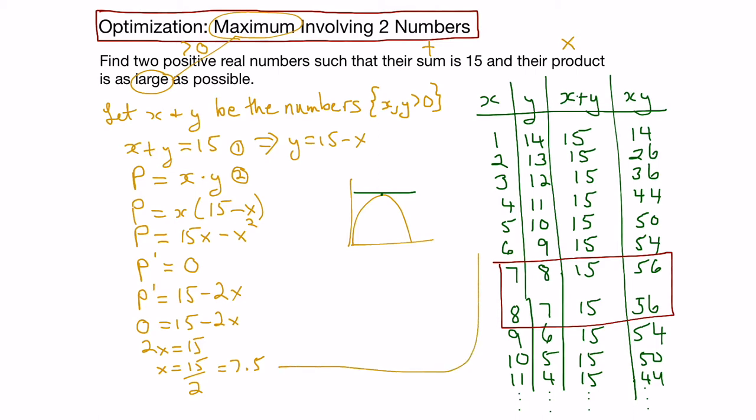To find y, we're going to substitute it into our first equation. This would be y equals 15 minus 7.5, and y would also therefore be 7.5.